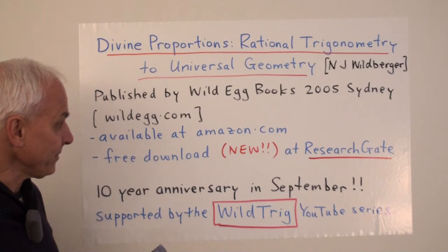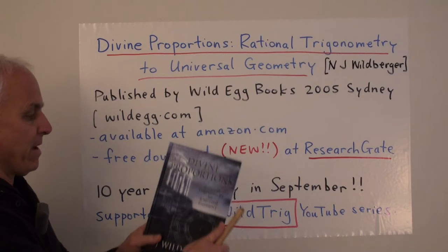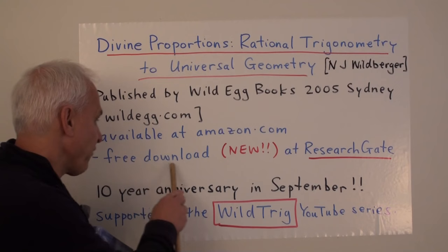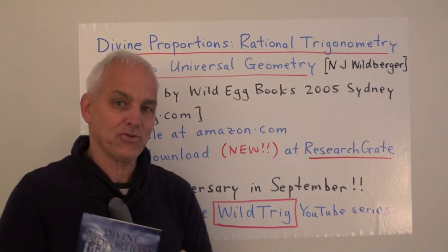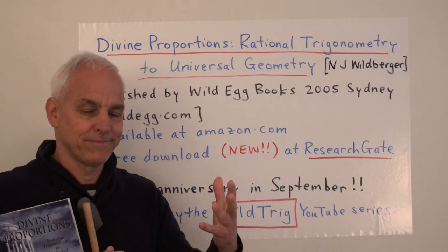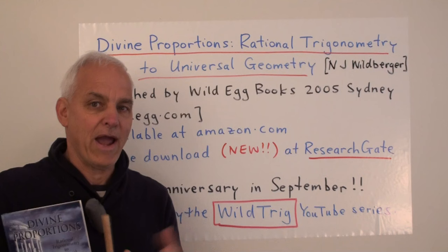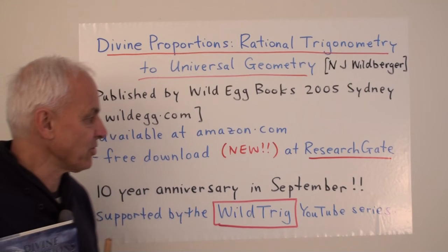So to celebrate the 10-year anniversary, I have decided to make this book freely available to the public in PDF form. It is now a free download at ResearchGate. ResearchGate is a very interesting, relatively new portal where people can put their research out there, make it accessible, and interact with other researchers — kind of like a Facebook for scientists and researchers.